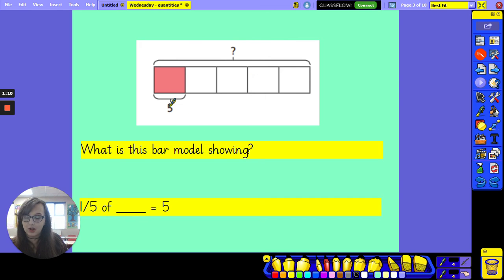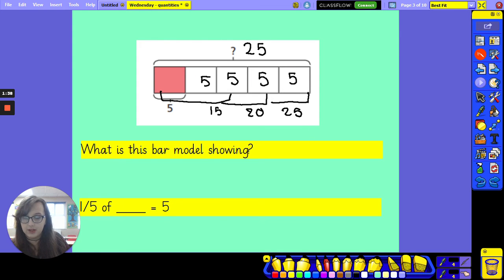I can work out what the whole is, what the whole amount is, using this fraction. So if I know that this is worth five, I know every other part here is worth five as well. So one-fifth is worth five. Two-fifths is five and five, that's ten. Three-fifths is fifteen. Four-fifths is twenty. And five-fifths is twenty-five. So I know that one-fifth of twenty-five is five. I can also see this because twenty-five divided by five is five. When you split twenty-five into five parts, you get five.